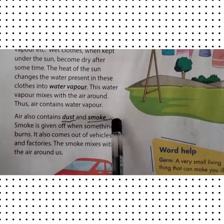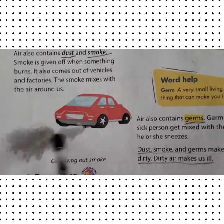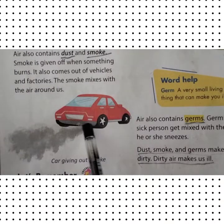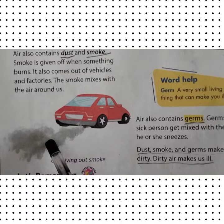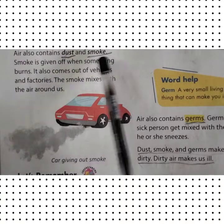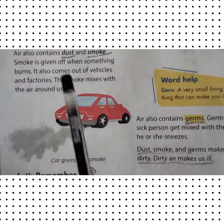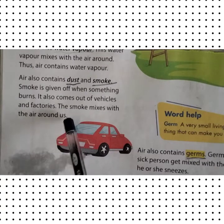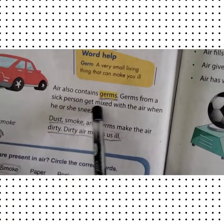Air also contains dust and smoke. Smoke is given off when something burns. Vehicles give off smoke — that is air pollution. Some smoke comes from vehicles, some from chimneys, and when we light bonfires in winter, smoke from those goes into the air too. That's why air contains dust, smoke, water vapour, and germs. Dust is also created when roads are swept.